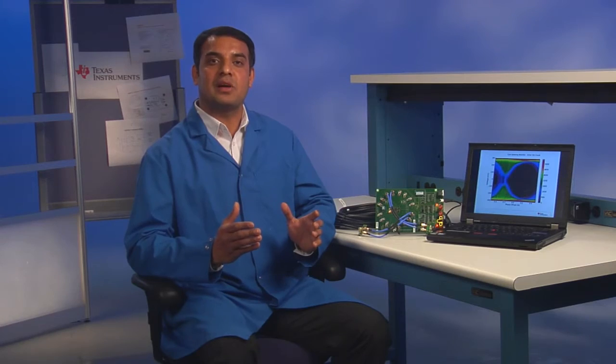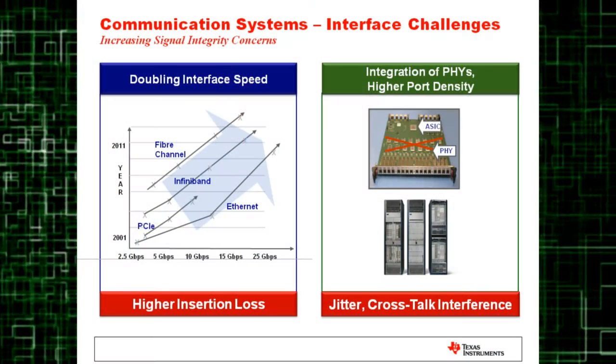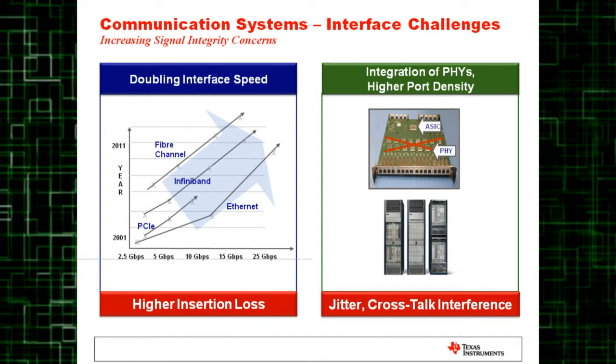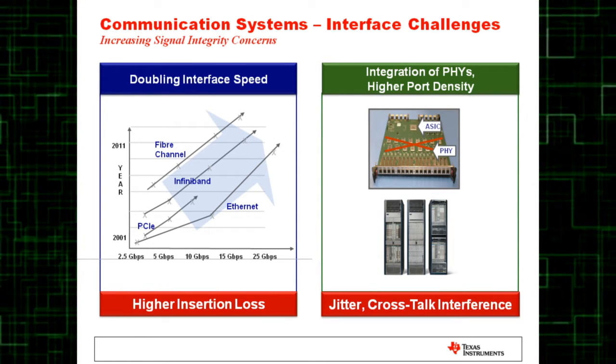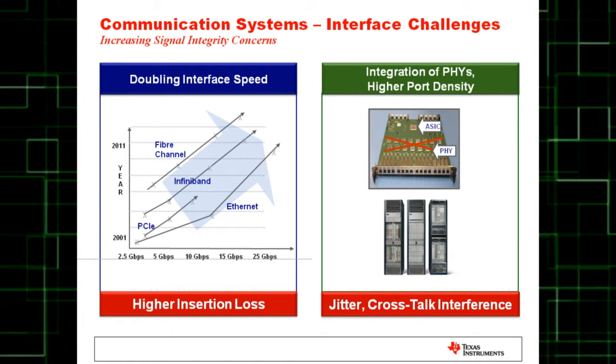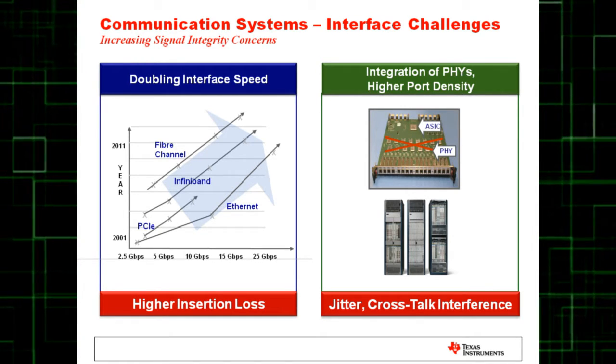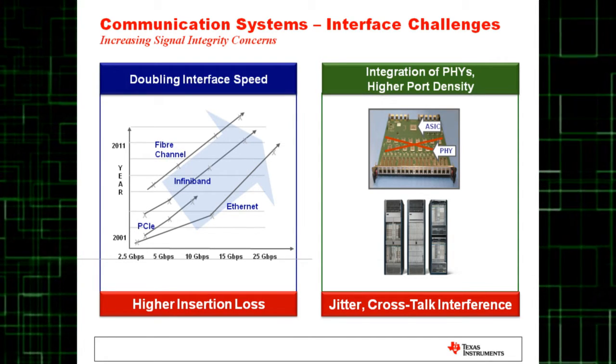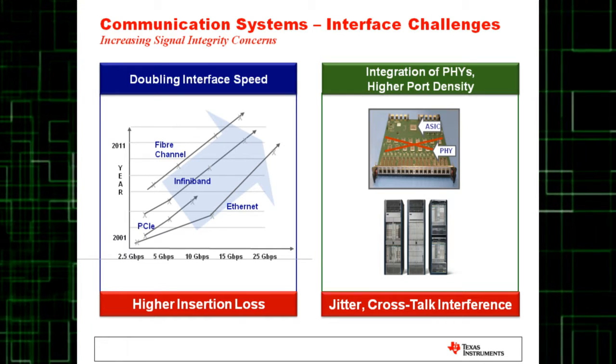Based on the lifestyle that we enjoy today, system engineers have to deal with two primary problems. The first problem is the increasing interface bandwidth speed. Every protocol has been doubling or tripling the amount of bandwidth that they support. This creates a higher insertion loss in the interconnect media such as backplanes and cables.